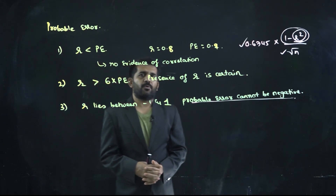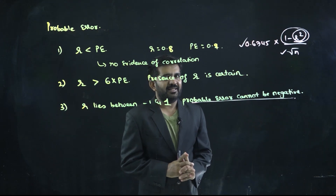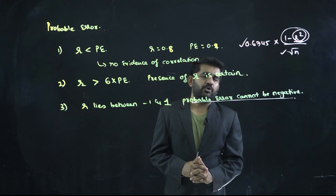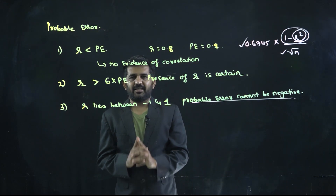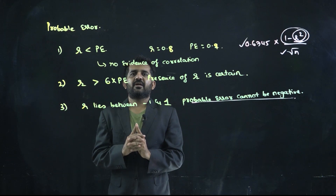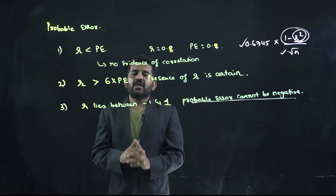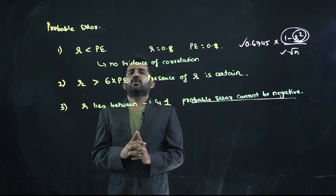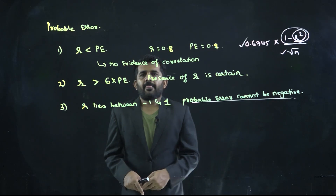Those are the three points of probable error. Probable error should be understood logically — it is helpful in giving the range of the correlation of the population when you know the correlation of a sample. Thank you, friends.